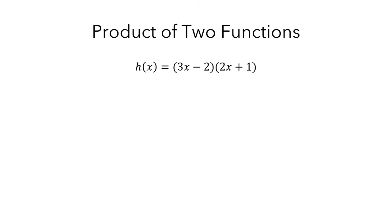Here is an example of a function h that is the product of two other functions. The way I've written it, it should be pretty clear what the formulas are for these other two functions. f is the linear function 3x minus 2, and g is the linear function 2x plus 1.